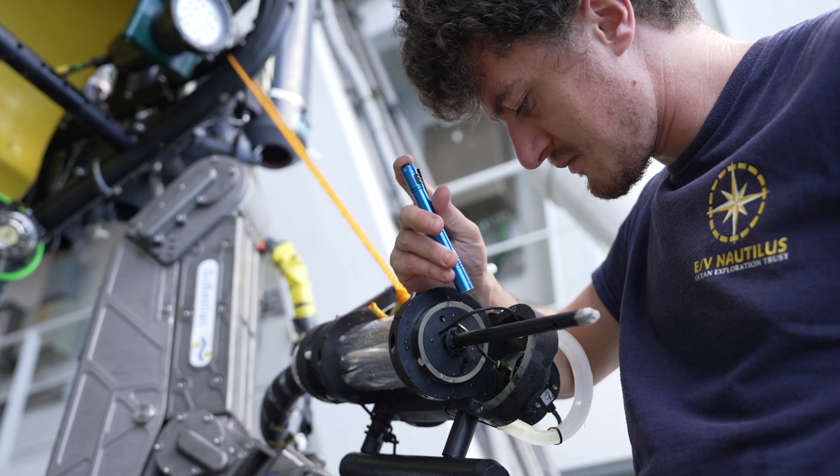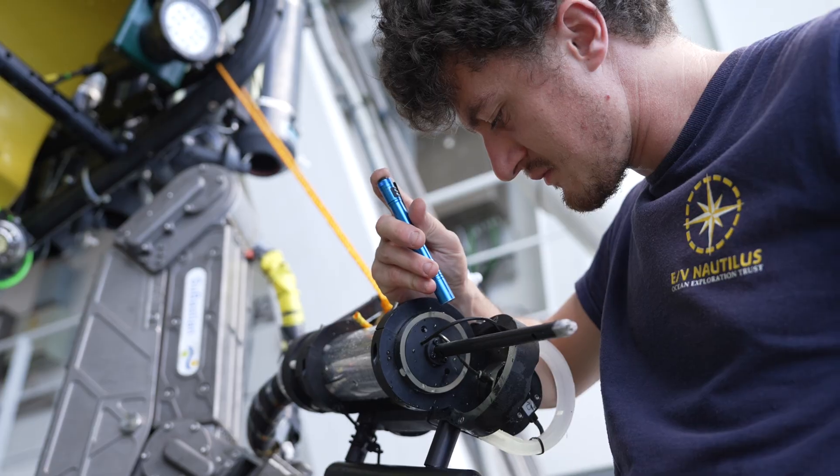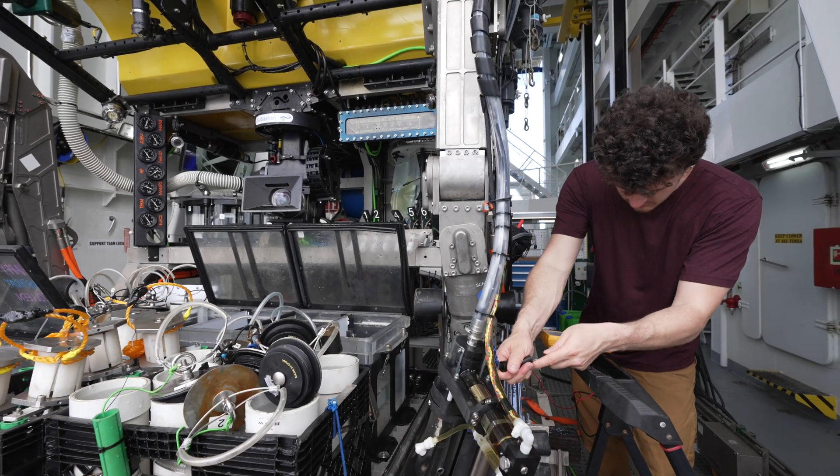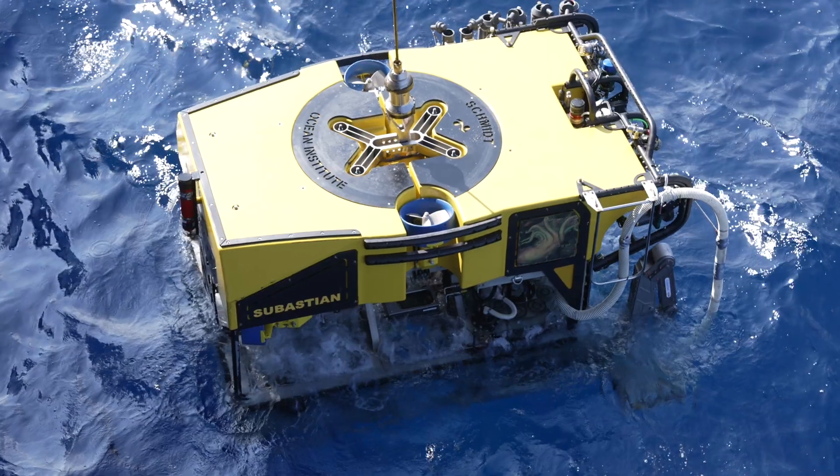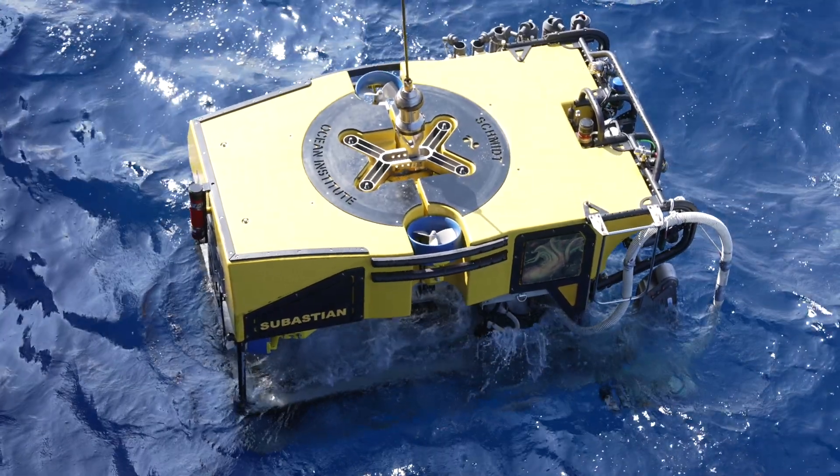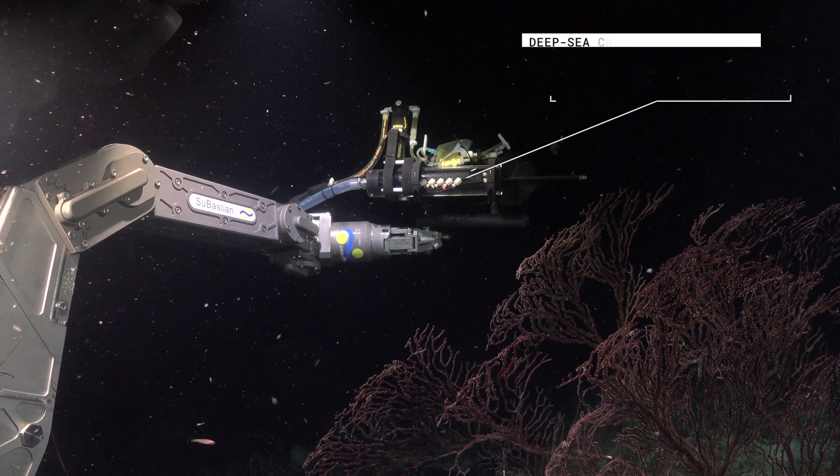We couldn't take DISCO down to the bottom of the ocean. It doesn't have the right pressure tolerance or the robust body to be strapped onto a submersible. And as a result, Solaris was born.